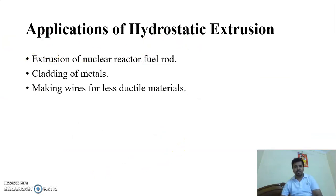Application of Hydrostatic Extrusion. With the help of this process, we produce the nuclear reactor fuel rod cladding of metals and making wires for less ductile material. If we have less ductile material, that is brittle material, we can make the wire by use of Hydrostatic Extrusion.